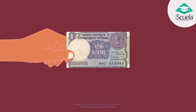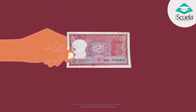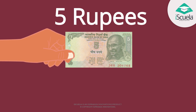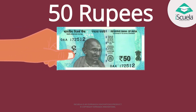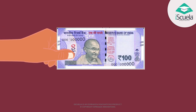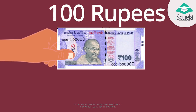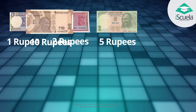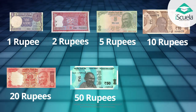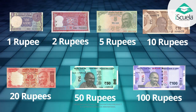Yes, this is a 1 rupee note. This is 2 rupees. This one is 5 rupees. This one is 10 rupees. And this one is 50 rupees. And this one is 100 rupees. So we have: 1 rupee, 2 rupees, 5 rupees, 10 rupees, 20 rupees, 50 rupees and 100 rupees.